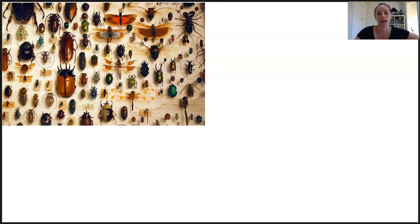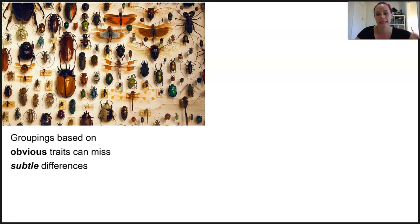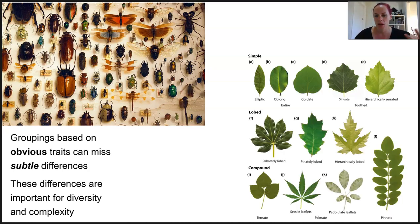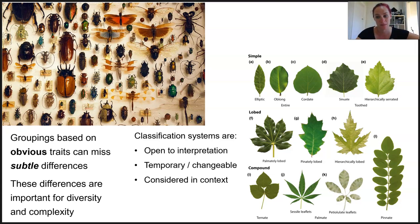When creating a system of classification for organisms, the groupings can be based on really obvious traits — in our sugar aisle example, wrapped versus unwrapped or individually wrapped versus not. But regardless of any general way of grouping, it's going to ignore the really small, subtle complexities of members in that group. Sometimes it's these exact subtle differences that create the range and complexity of life on Earth. So while classification systems are important, we've also got to consider that they are open to interpretation, temporary and changeable as new information becomes available, and must be considered in the context they were originally created.